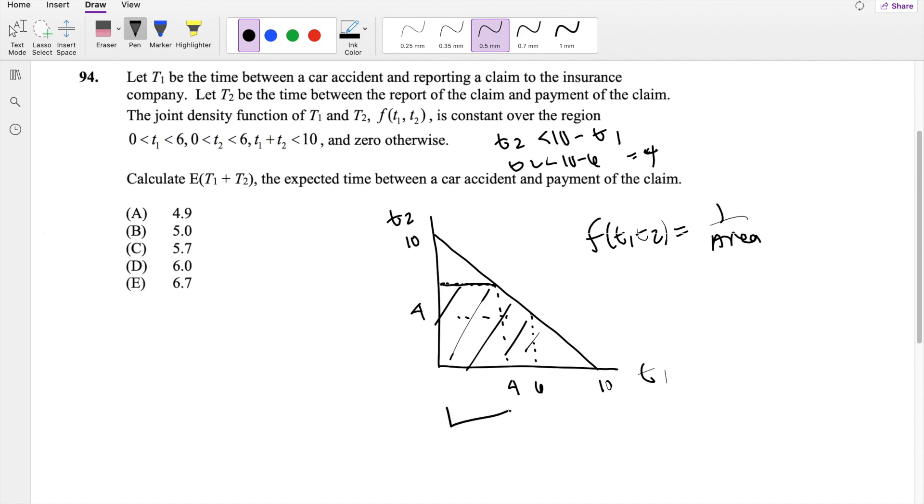From here to here, it's just a square with a base 4 and a height 6. From here to here, actually, this little box right here is also a square. So that's a square with a base 2 and a height 4.